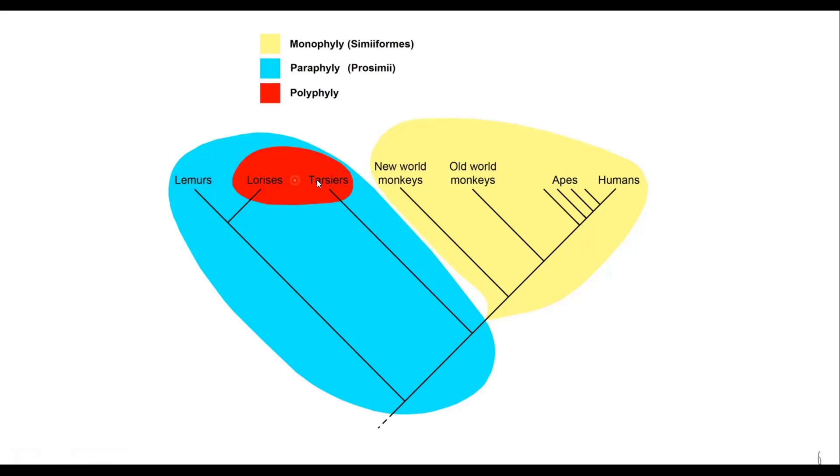And finally you have this red portion. See now none of these taxons are directly having any common ancestor. This branches out from this ancestor. This branches out from this ancestor. So they have multiple origins. Hence it is an example of a polyphyletic clade.